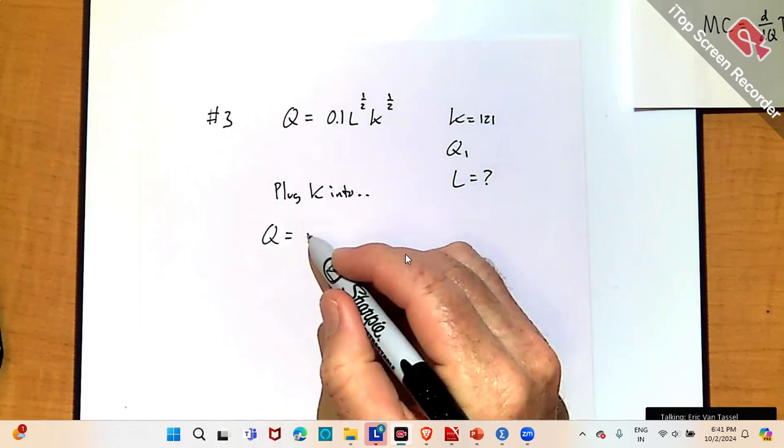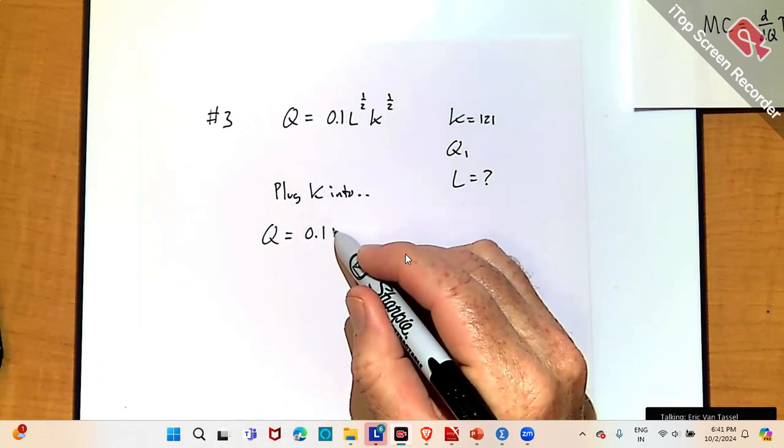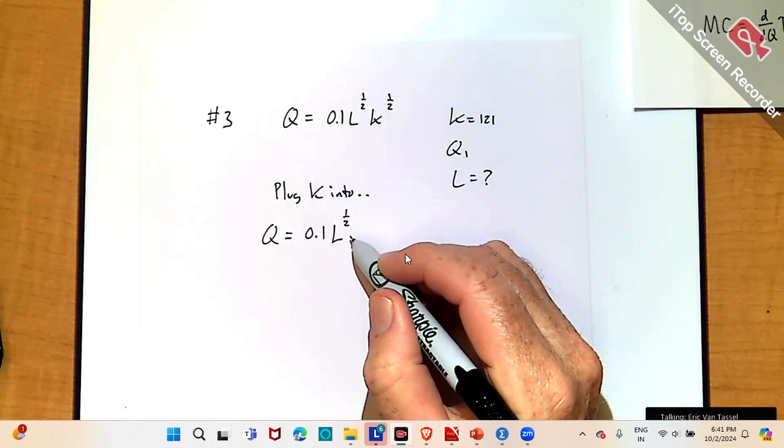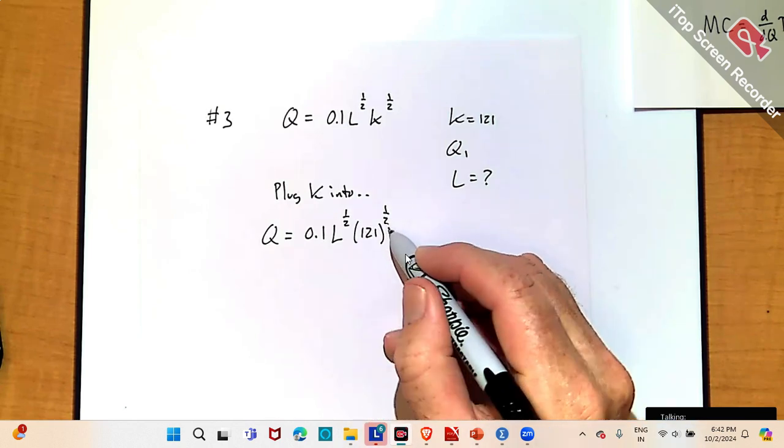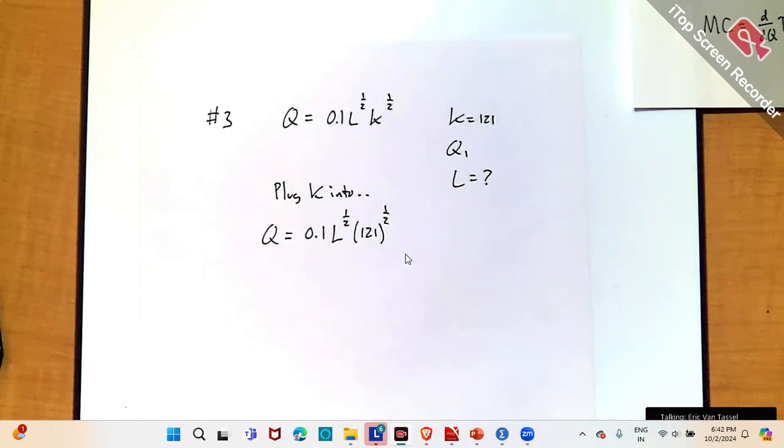So, I have Q equal 0.1 L to the one half. I don't know what L is. But I do know what K is. K is 121. And I'm taking that to the power of one half, as it says in the production function. So, plug in K.